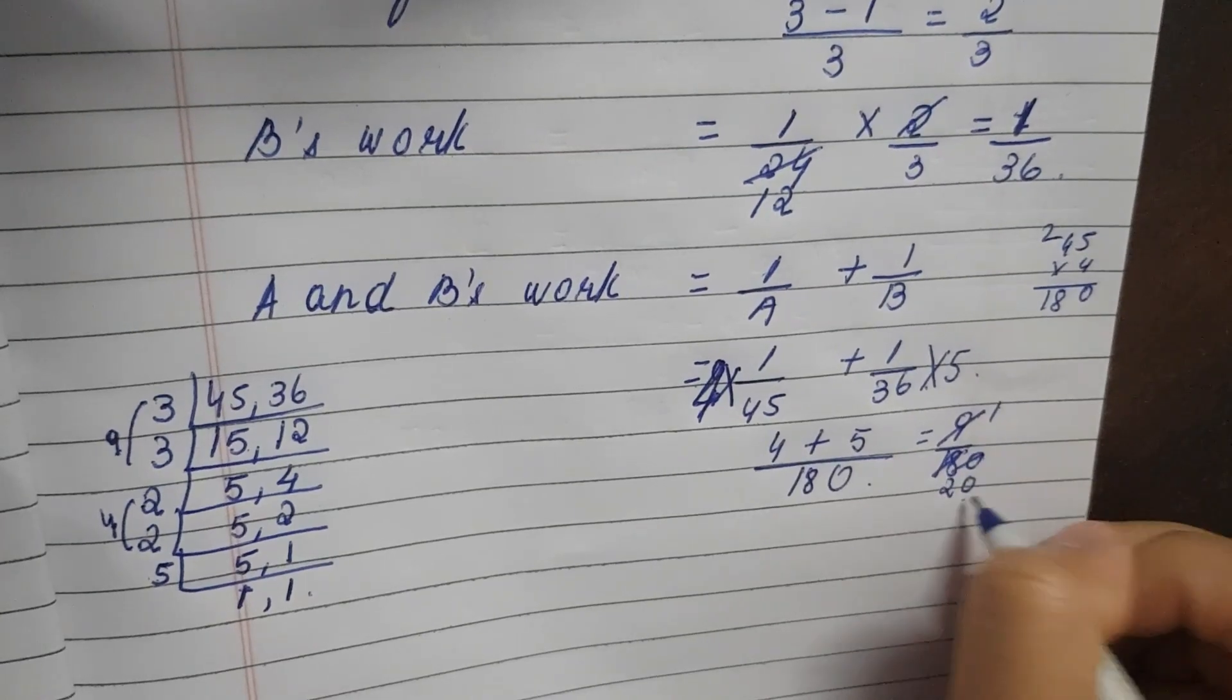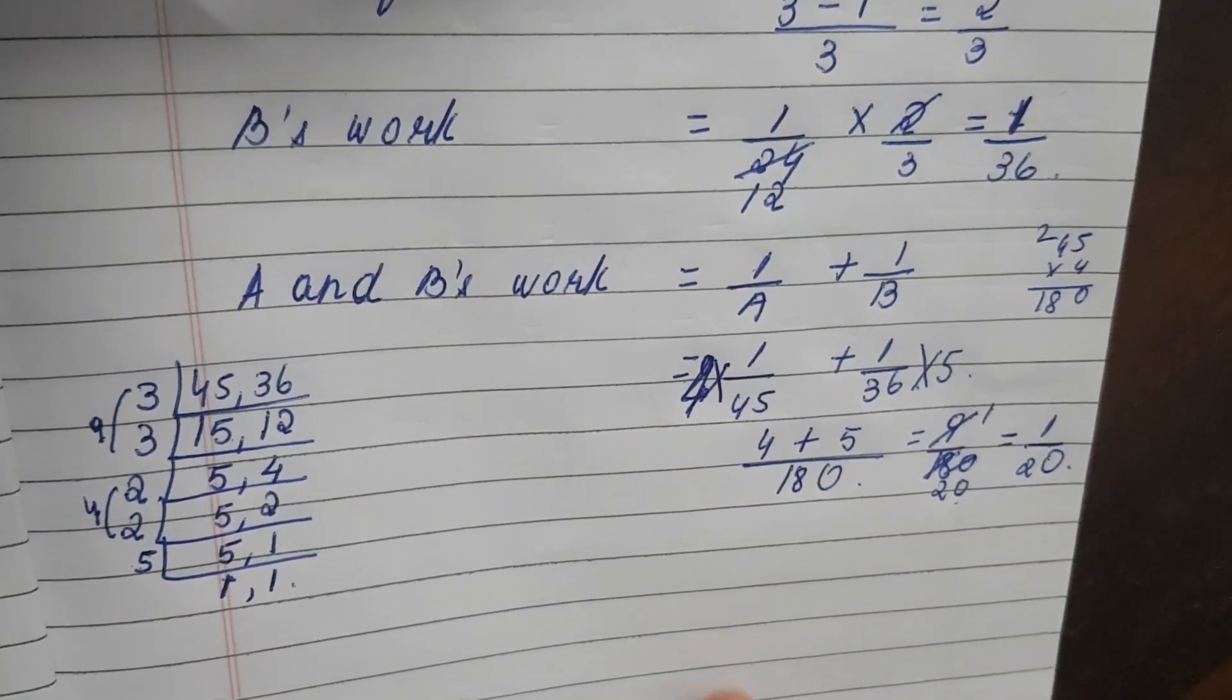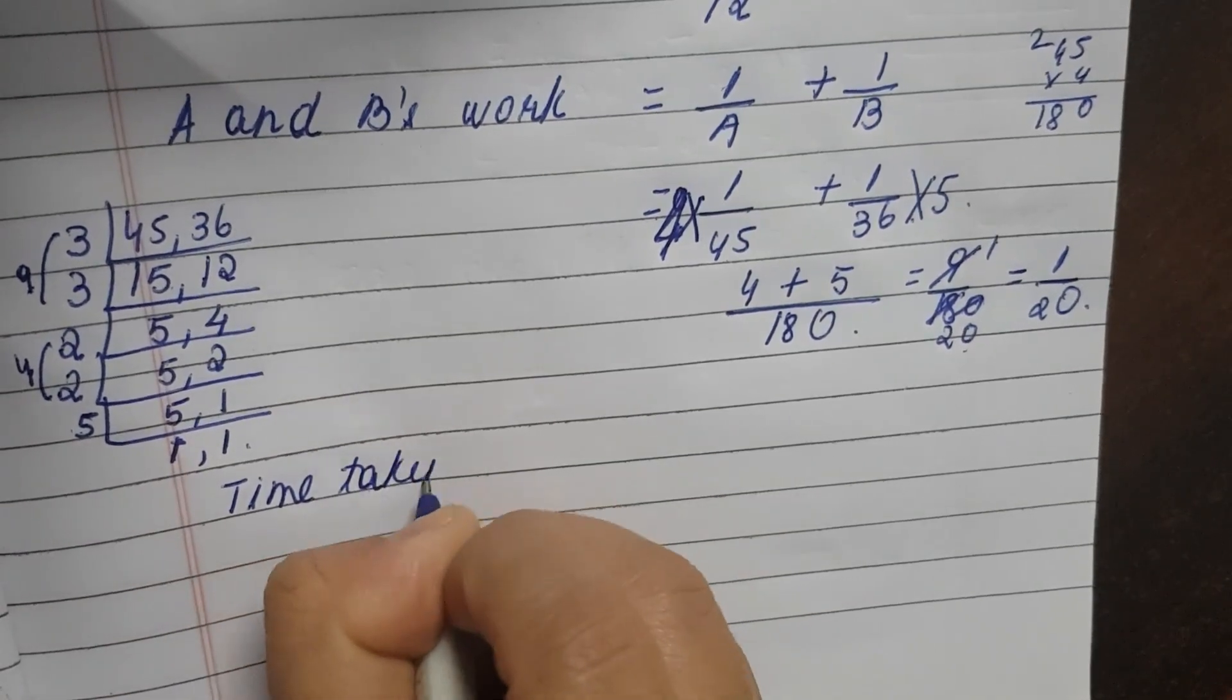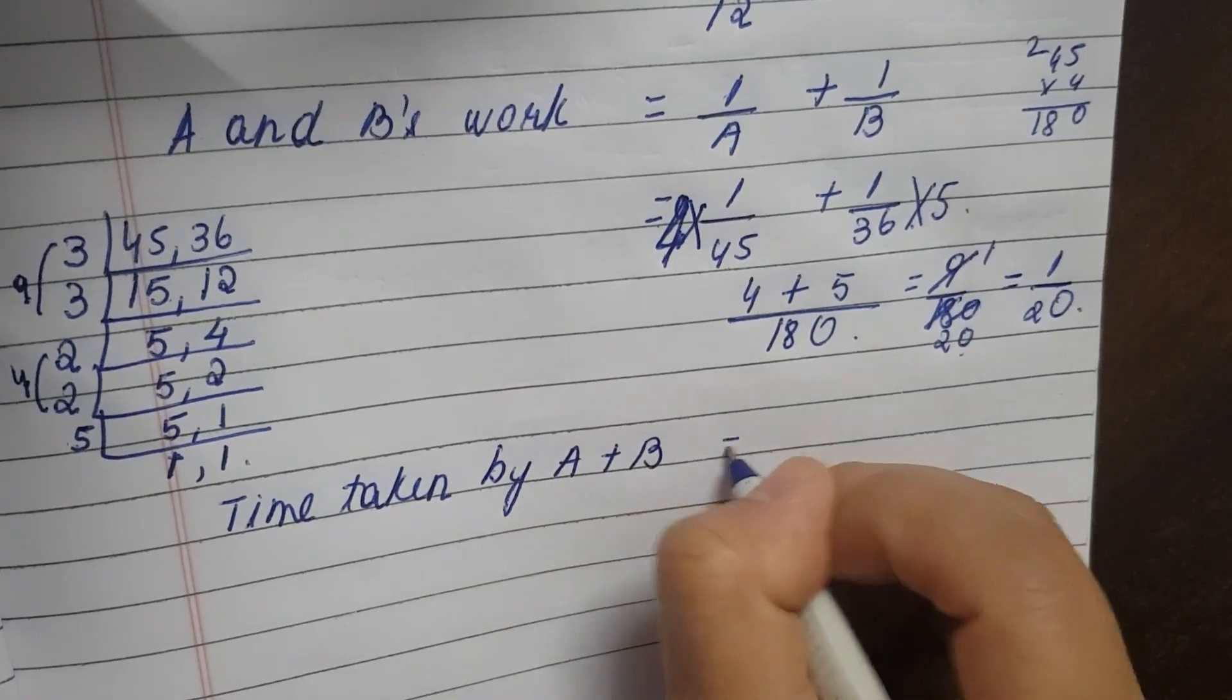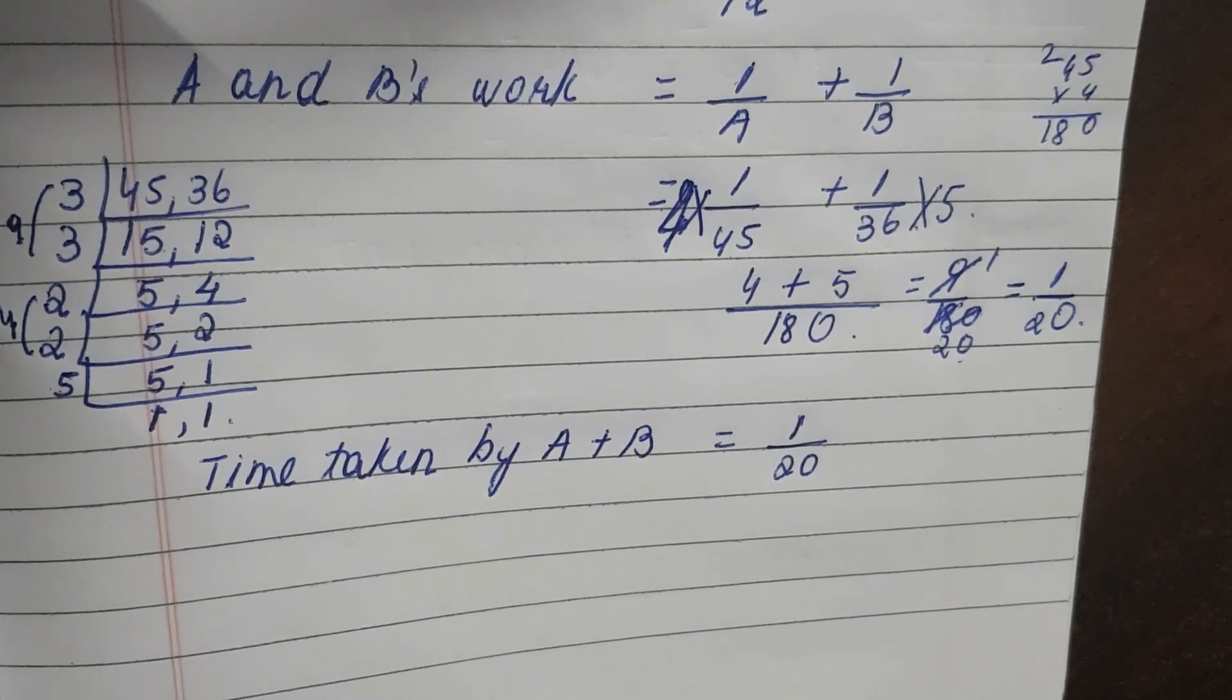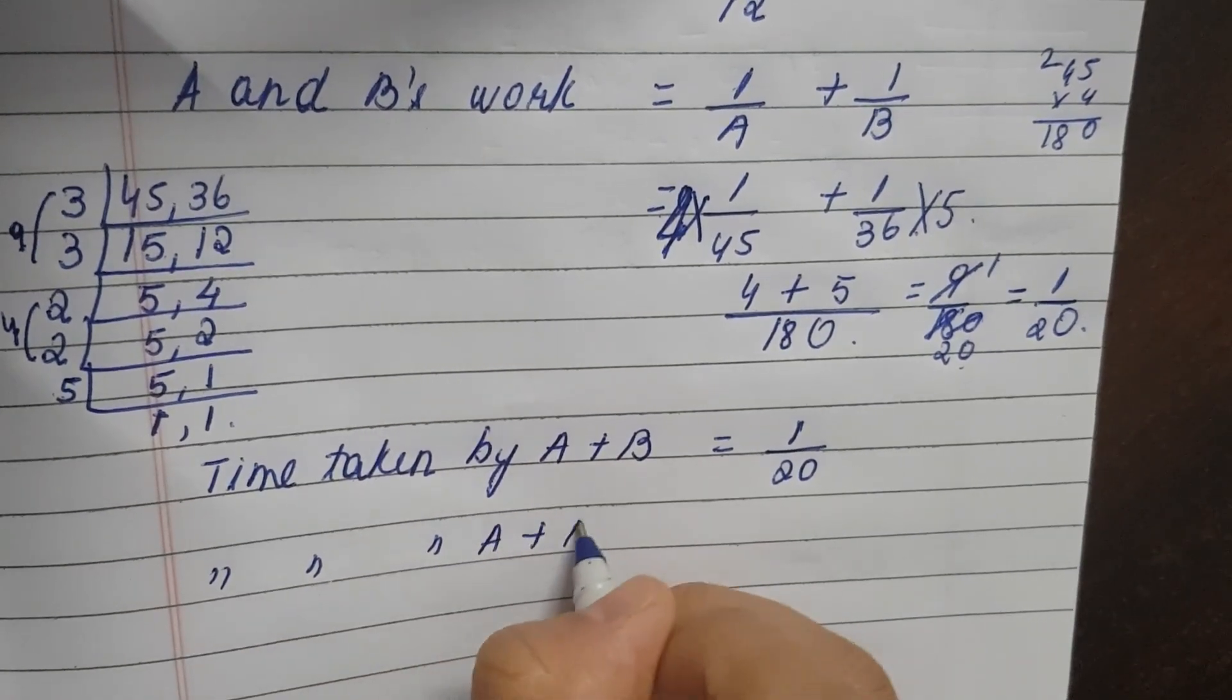So A and B can complete a work in 20 days. So time taken by A and B is equal to 1 by 20. Then they are asking time taken to complete 80 percentage of the work. So time taken by A and B to complete 80 percentage of work.